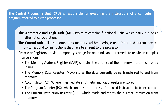Registers are of many types. The memory address register contains the address of the memory location currently in use. The memory data register contains the data currently being transferred to and from memory. The accumulator is where intermediate arithmetic and logical results are stored. The program counter contains the address of the next instruction to be executed. The current instruction register stores and reads the current instruction from memory.